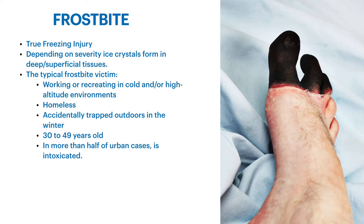Another huge population that you see frostbite in are homeless individuals, especially in winter months, who don't have proper clothing and are sleeping outside with complete exposure to the elements. Then you also have individuals accidentally trapped outdoors in winter — people who lock their keys in the house, people involved in avalanches or snow slides. The most at-risk group is 30 to 49 years old, and in more than half of urban cases, the individuals are intoxicated.